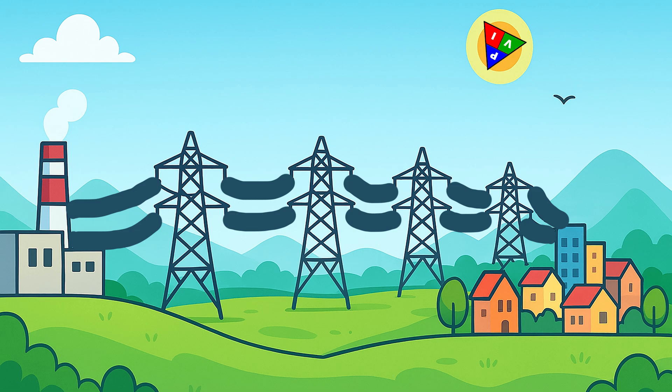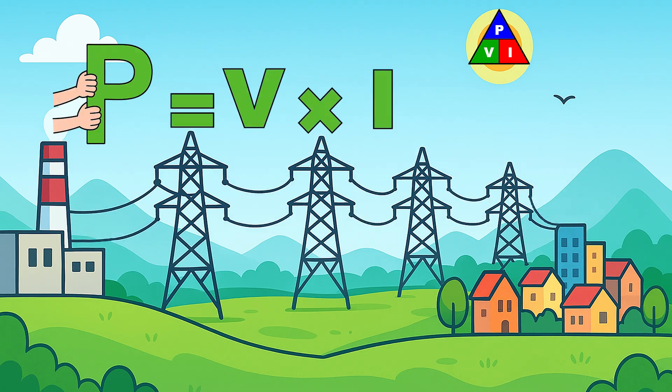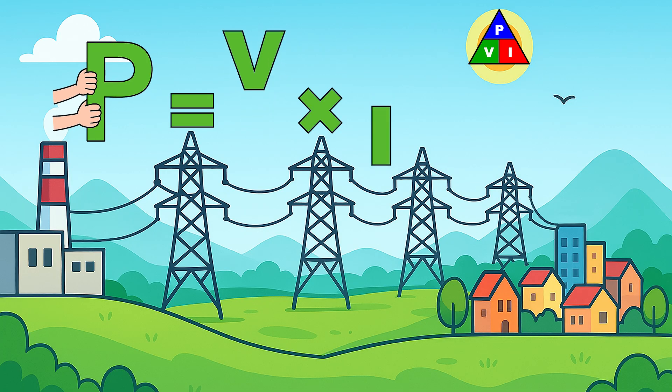Here's where the power formula comes to the rescue. If we want to transmit the same amount of power but reduce the current so the wire can be thinner, the only way is to increase the voltage. And that's the solution.